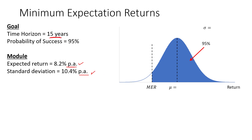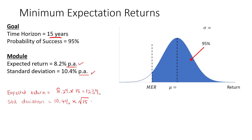To adjust to 15 years, for the expected return, it will be scaled by multiplying by 15, which gives us a return of 123% over the 15-year time horizon. For the standard deviation, when you scale it, you multiply by the square root of the time factor. So I'll multiply by the square root of 15, giving us 40.279% for that 15 years. So we have 123% and 40.279%.